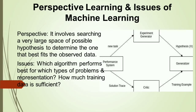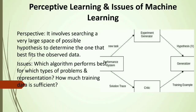The next topic is perspectives and issues in machine learning. Perspective involves searching a very large space of possible hypotheses to determine the one that best fits the observed data. Issues include which algorithm performs best for which type of problem or representation, and how much training data is sufficient.